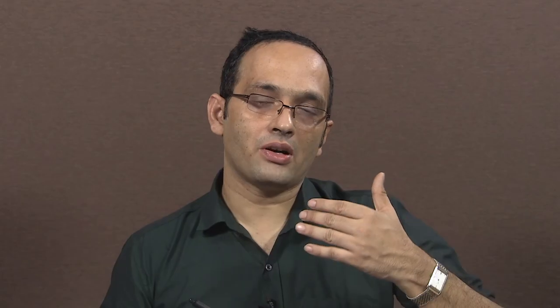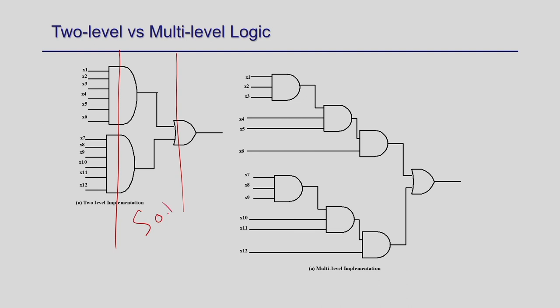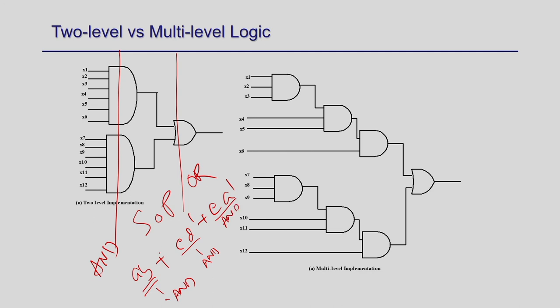In two-level optimization, the Boolean expression is represented in sum-of-product or product-of-sum form — an AND plane and an OR plane. For example: AB + CD̄ + EĀ. Each product term is one AND gate, and the sum is the OR gate. The cost is the number of product terms (each is one AND gate) and the number of literals in each product term, which determines the AND gate size.